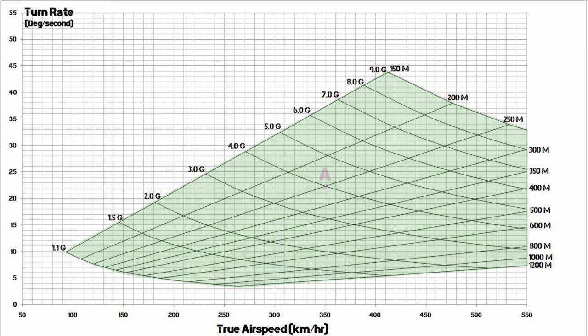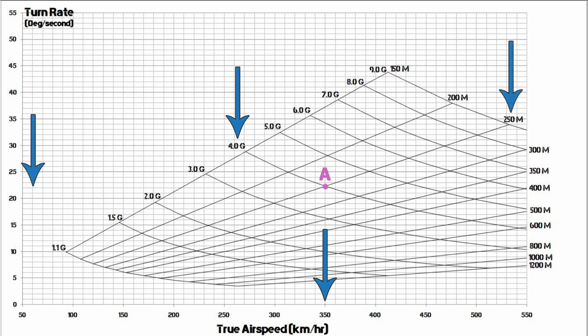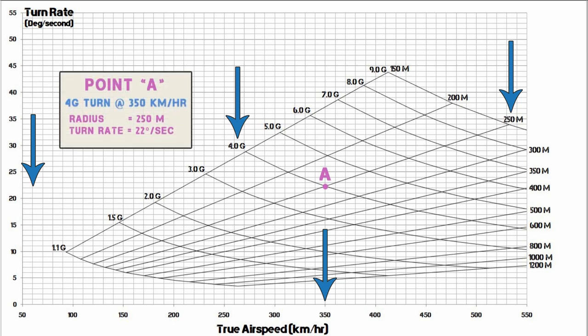Now we'll look at an example of how to read it. Point A is on the 4G line at 350 kilometres per hour. This will give you a turn radius of 250 metres and a turn rate of 22 degrees per second. So with just this one point, the graph gives us four important pieces of information about our turn performance.